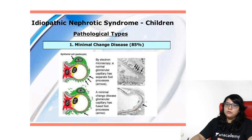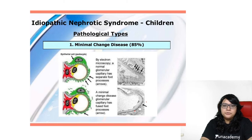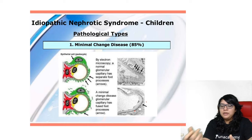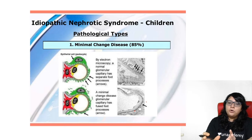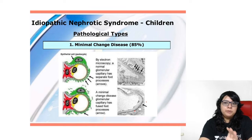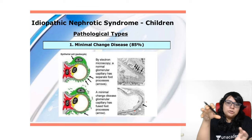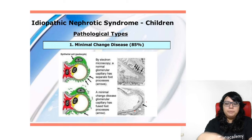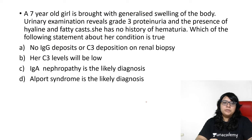The drug of choice is prednisolone. I have actually taken the entire treatment protocol of nephrotic syndrome on the plus platform — including steroid-infrequent relapses, frequent relapses, steroid-dependent, and steroid-resistant cases. My lecture is uploaded there covering nephrotic syndrome comprehensively so you don't miss any point and can pick up the correct answer for whatever question is asked.